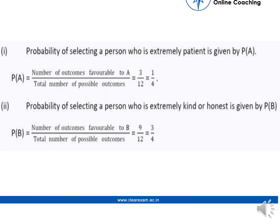For Case 1, the probability of selecting an extremely patient person: favorable outcomes for A is 3, and total possible outcomes is 12, so P(A) = 3/12 = 1/4. For Case 2, selecting a person who is extremely honest or kind: favorable outcomes are 9, and total persons are 12, so P(B) = 9/12 = 3/4.